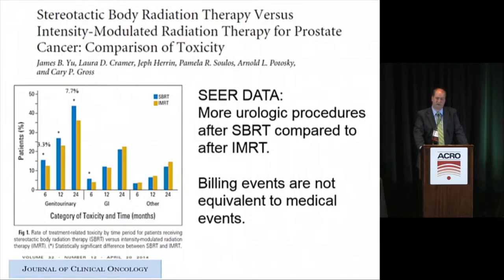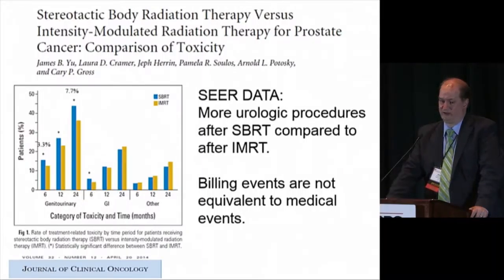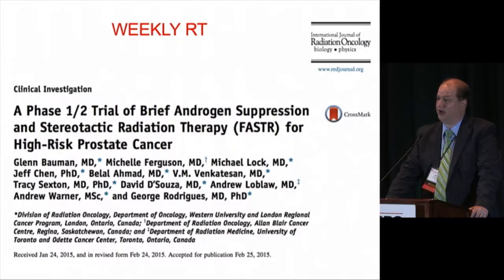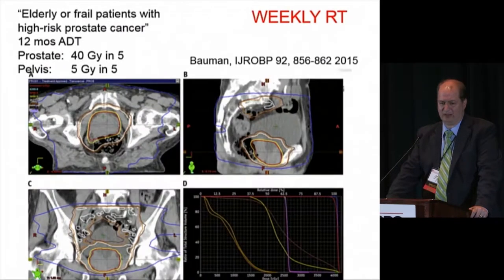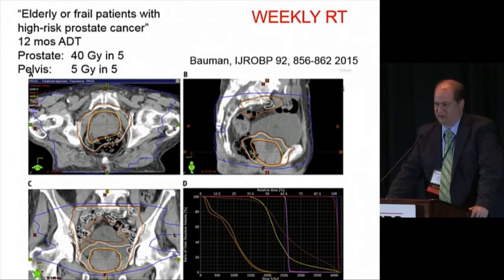What is the data against SBRT? The first is from James Yu at Yale, looking at SEER data matched with Medicare billing data for genitourinary events at 6, 12, and 24 months. At 24 months, there were 7.7% more billing claims for urologic procedures or office visits in those treated with SBRT compared to IMRT. For GI symptoms, a slightly greater difference at 6 months but no differences over time. These are billing data, not necessarily toxicity, and reflect different practices and referral patterns.